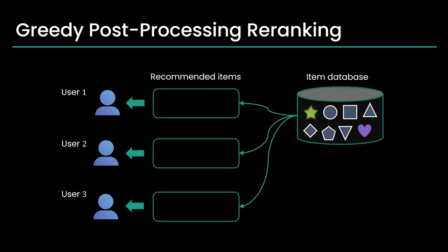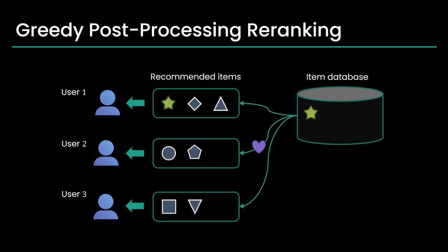Existing fairness-aware methods typically employ post-processing with greedy algorithms to adjust original rankings for fair exposure. Yet, these algorithms face challenges in parallelization and scalability with increasing numbers of users and items.